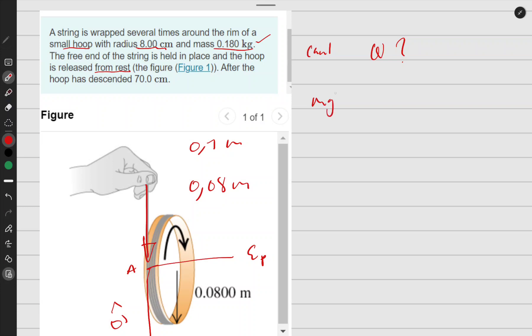The mgh potential energy that it had was used to create rotational kinetic energy and also translational kinetic energy. I'm going to work to find this because I know the conversion V equals R omega.